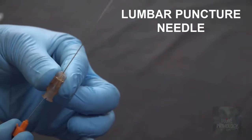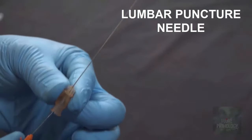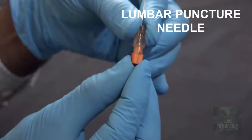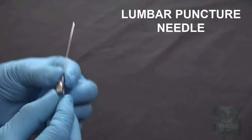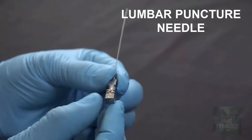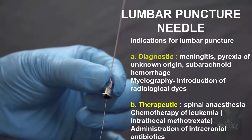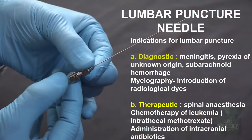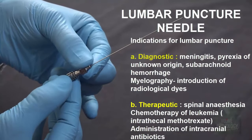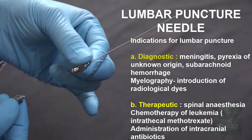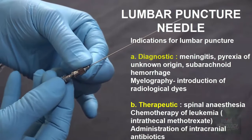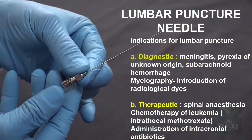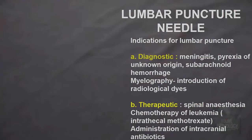This is a disposable LP needle, or lumbar puncture needle. It has a needle with a stylet inside. This is a stainless steel lumbar puncture needle which can be reused. Indications of lumbar puncture: diagnostic indication for analysis of CSF during myelography, and therapeutic indications such as during spinal anesthesia and treatment by chemotherapy or antibiotics.